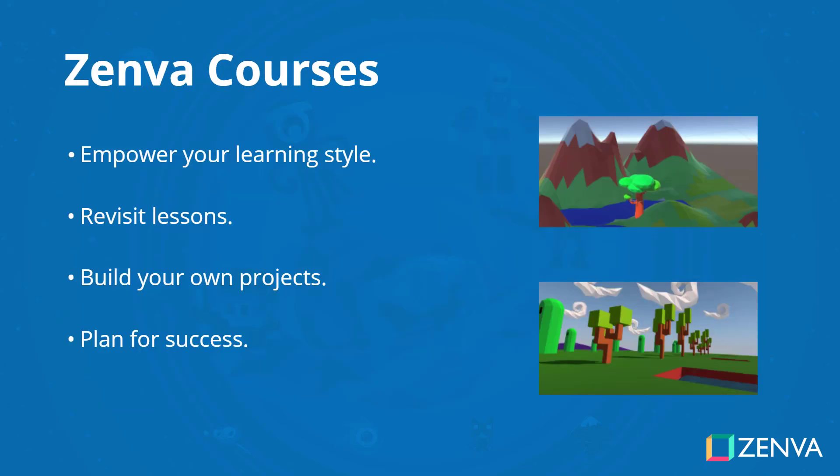Zenva is an online learning academy with over 500,000 students. We feature a wide range of courses for people who are just starting out or for people who just want to learn something new. The courses are also very versatile, allowing you to learn in really whatever way you want. You can choose to view the online video tutorials, read the included lesson summaries, or even download the course files and follow along with the instructor.